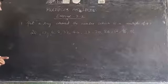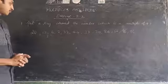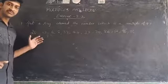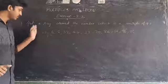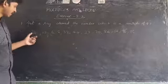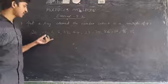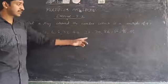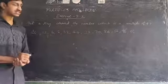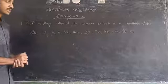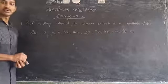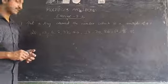We need to ring the numbers which are multiples of 4. The numbers given are: 20, 12, 6, 32, 44, 38, 70, 84, 56, 90, and 96. We can find the multiples of 4 simply by using the 4 times table.